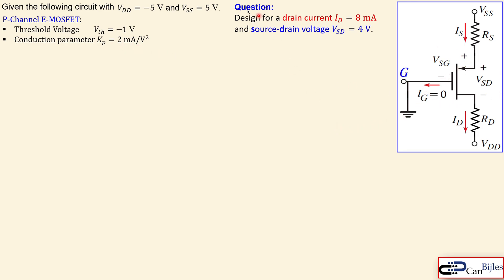For our design, we need to achieve a drain current of eight milliamps and a source-to-drain voltage VSD of four volts. Since the gate current is zero, the source current equals the drain current at eight milliamps.